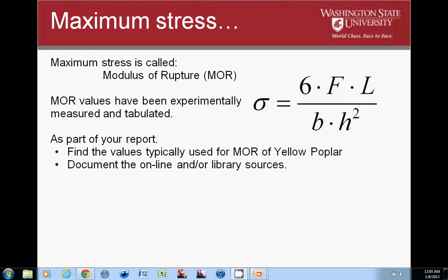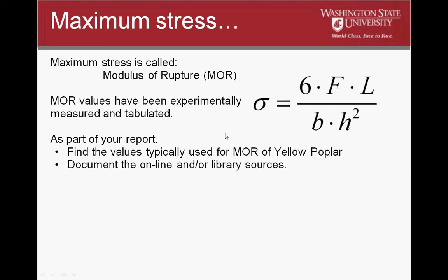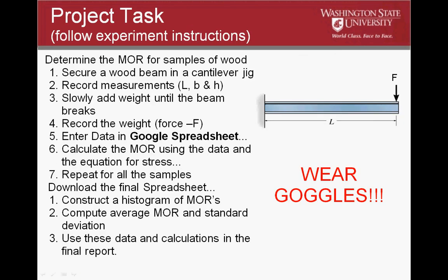The maximum stress in a given beam is called the modulus of rupture. This is occurring right there at the top of the beam right before the beam breaks. That would be the maximum stress point. Modulus of rupture values have been experimentally measured and tabulated for various types of materials. For our experiment, we're going to be using yellow poplar. As part of your report, it will be important to go find typical values of yellow poplar modulus of rupture. Those can be found online or in the library - there's various sources out there. This modulus of rupture can be calculated using this formula, very similar to what we were just looking at on the previous page.